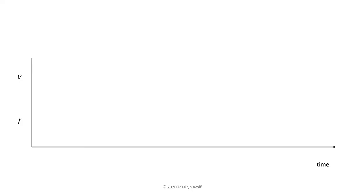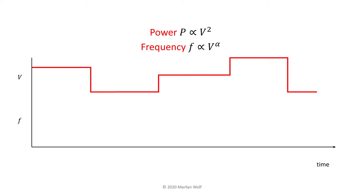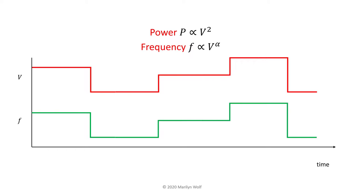Power consumption is a key metric for embedded computing systems, and scheduling can have a big impact on total power consumption. A processor's power consumption is proportional to the square of the voltage. Its frequency is proportional to a power of V — as the voltage goes up, the frequency goes up but so does power consumption. Modern processors vary the voltage applied to the processor and also vary the frequency at the same time to match the available performance at that voltage. By varying the voltage, we can trade off power consumption for necessary performance. This technique is known as DVFS — Dynamic Voltage and Frequency Scaling.